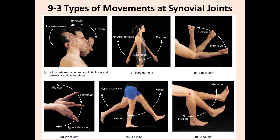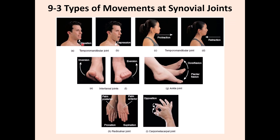At the knee, moving the leg forward is extension; moving it backward produces flexion. Elevation moves the lower jaw upward; depression moves it downward. Protraction moves the jaw forward; retraction moves it backward. Moving the ankle and foot inward is inversion; outward is eversion. Moving the foot upward (toward the dorsum) is dorsiflexion; moving it downward (toward the plantar surface) is plantar flexion.